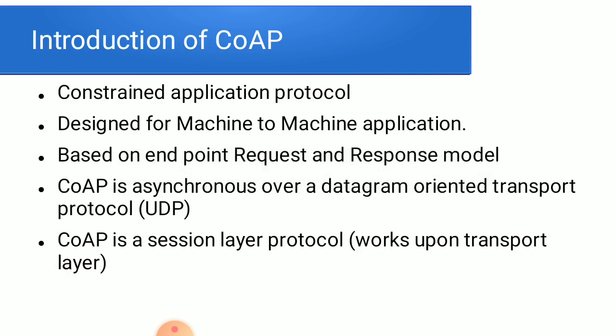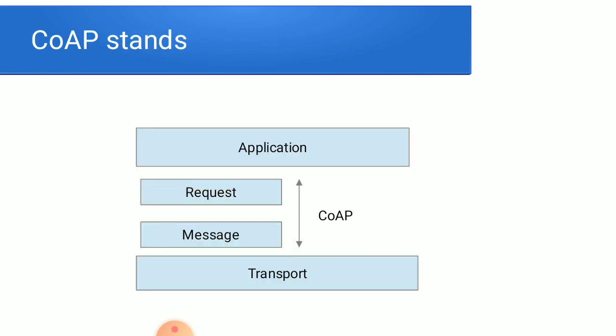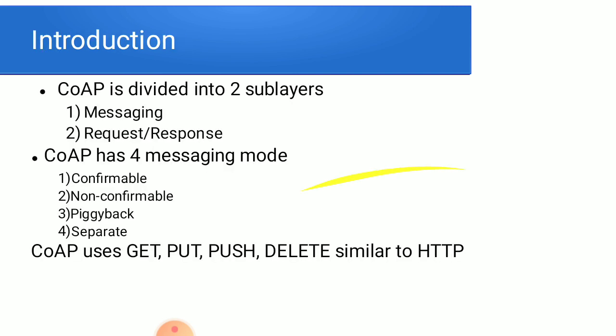CoAP sits between the application and transport layer. It is mainly a session-type layer protocol. In the CoAP diagram, CoAP stands between the application and transport layer. In this transport layer, we use mainly the UDP type of protocol, not TCP.